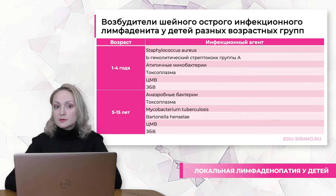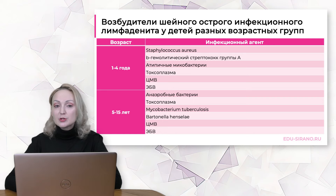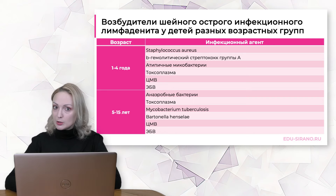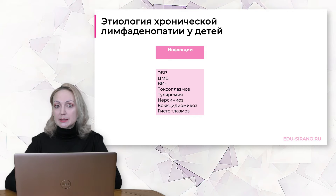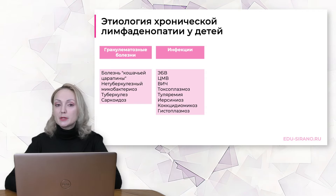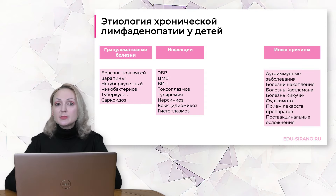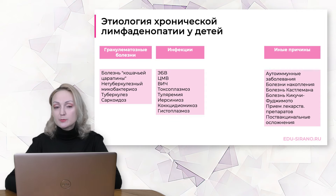Чем старше становится ребёнок, тем большее значение приобретают герпетические инфекции и растёт доля микобактерий – как микобактерии туберкулёза, так и нетуберкулёзных микобактерий. Если говорить об этиологии хронической локальной лимфаденопатии у детей, причиной могут быть инфекционные болезни: хронические формы Эпштейн–Барр-вирусной и цитомегаловирусной инфекции. Также это группа гранулематозных болезней: болезнь кошачьей царапины, нетуберкулёзный микобактериоз, туберкулёз и саркоидоз. Саркоидоз у детей бывает крайне редко, но о нём необходимо помнить. Причиной также могут быть поствакцинальные осложнения – в практике встречалась пациентка с генерализованной лимфаденопатией после введения живой коревой вакцины.